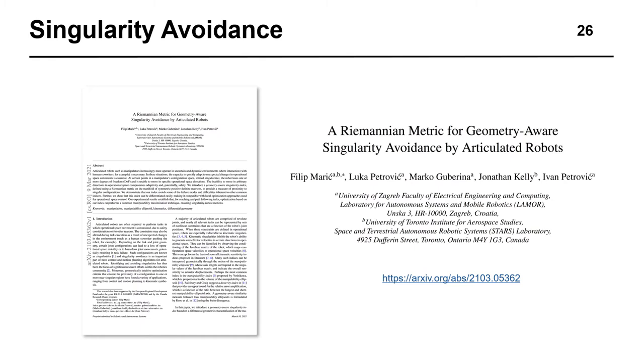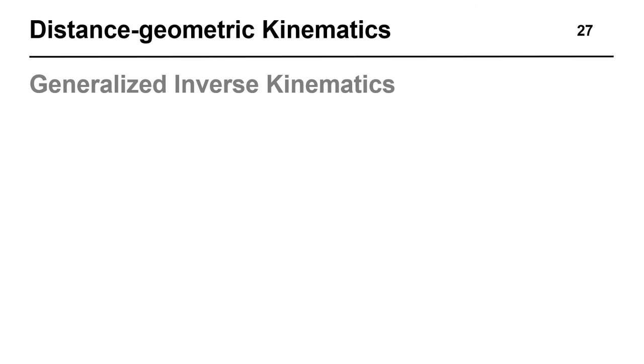Our paper, titled Riemannian metric for geometry-aware singularity avoidance, is currently in review for the Robotics and Automation Systems journal, but the preprint is freely available on archive.